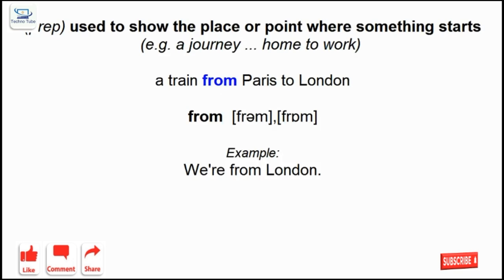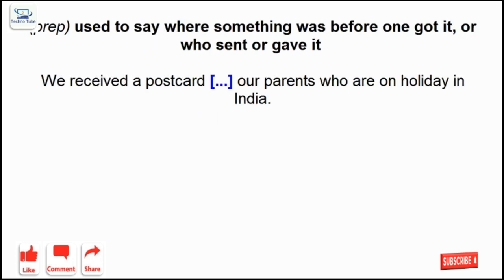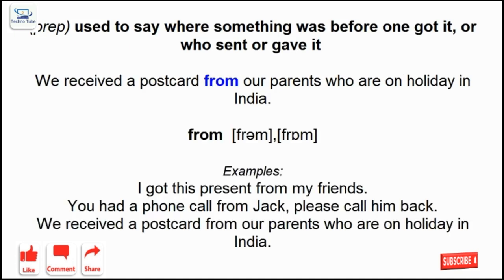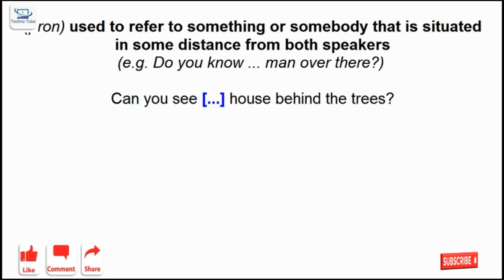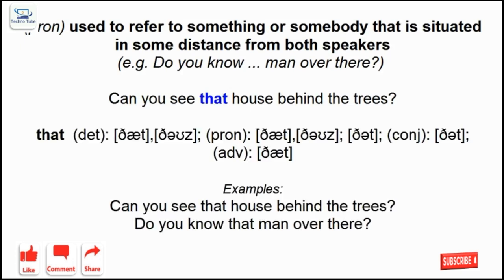From: used to show the place or point where something starts. From: used to say where something was before one got it, or who sent or gave it. That: used to refer to something or somebody that is situated at some distance from both speakers.